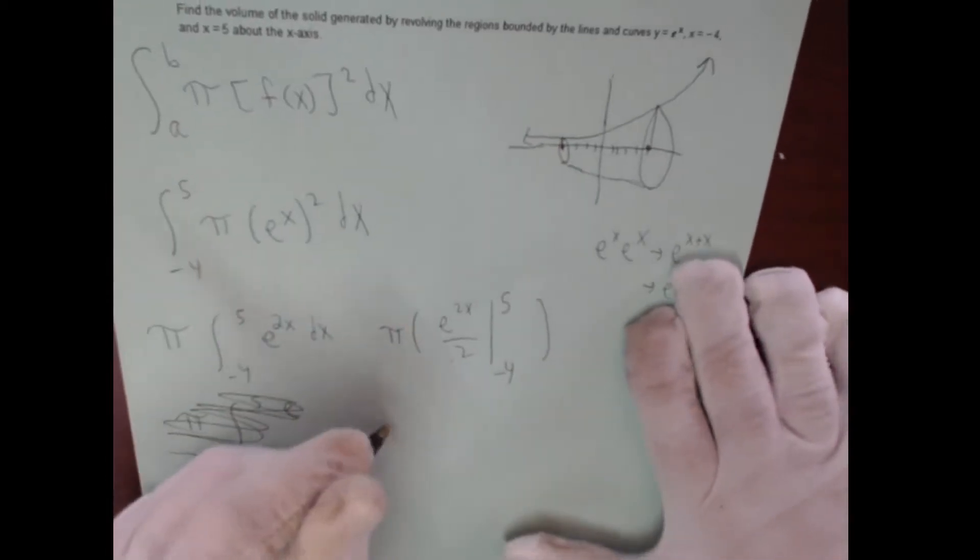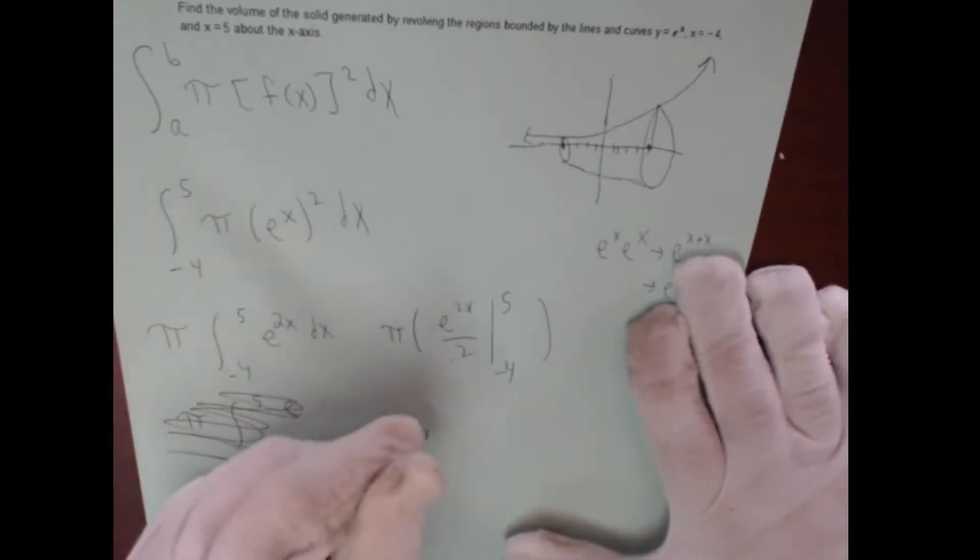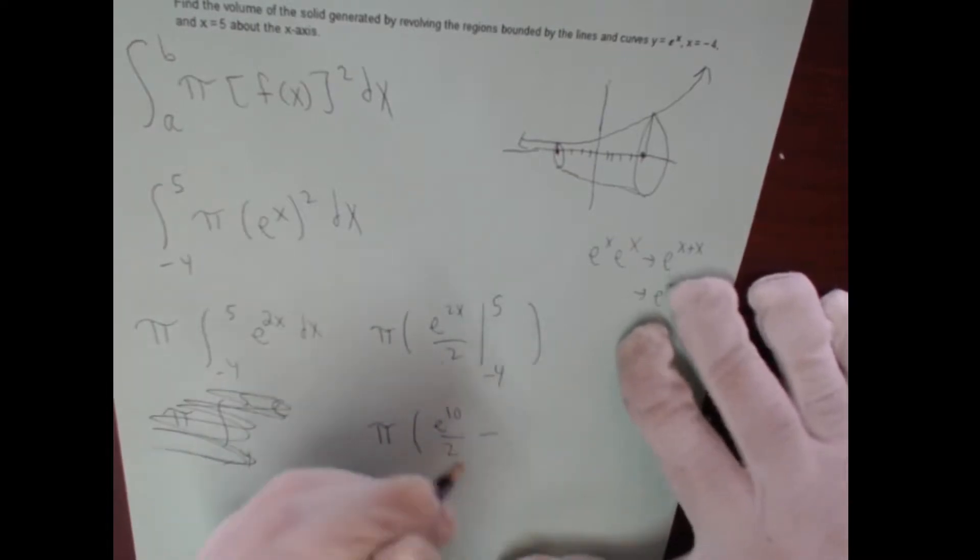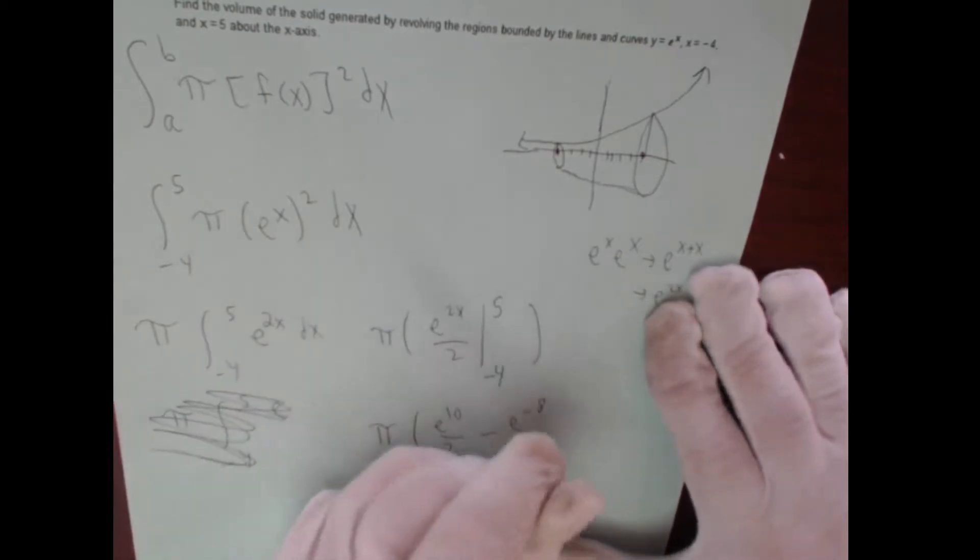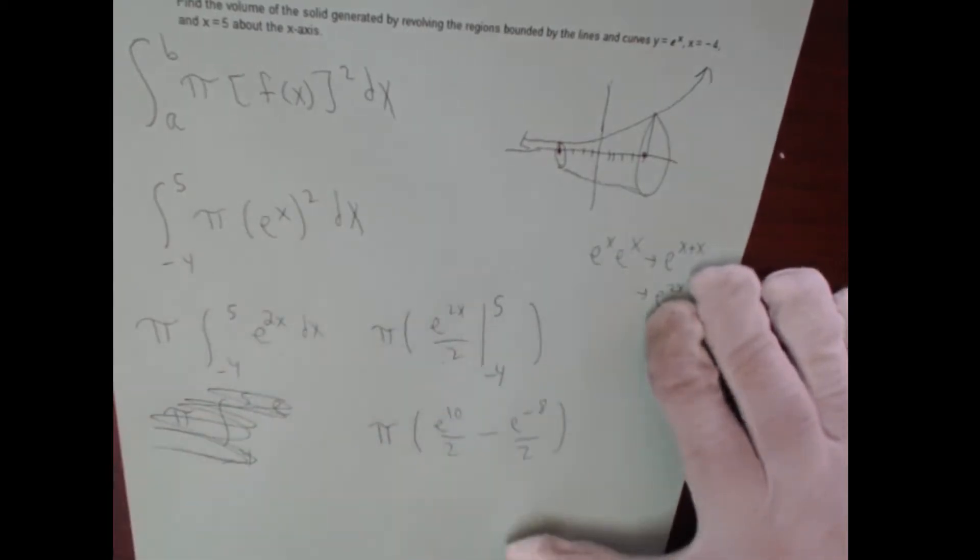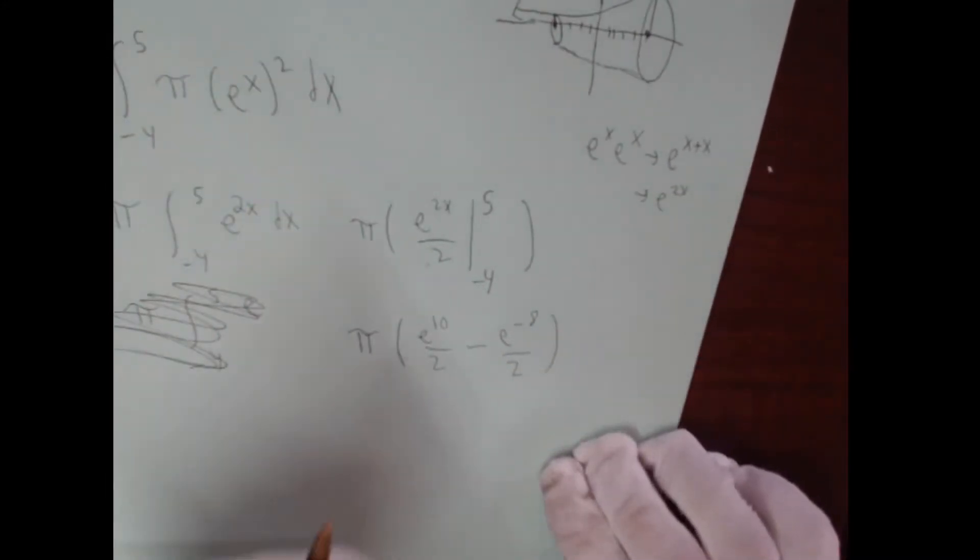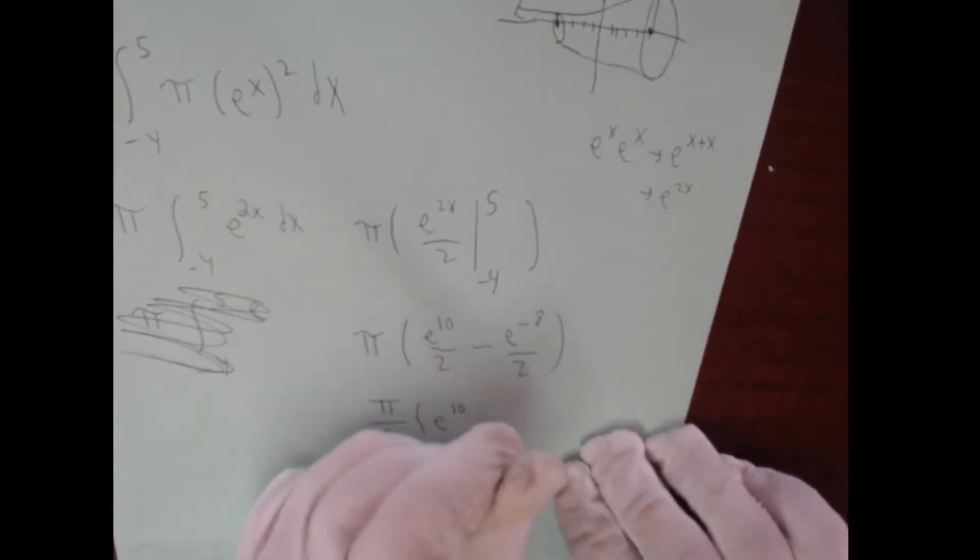All right, so if we do that, there's my pi. This will be e to the 2 times 5 which is 10, minus e to the 2 times negative 4 which will be e to the negative 8, over 2. And this is basically the answer that the book gets. They go ahead and pull out the divided by 2 and factor it, so they get a final answer of e to the 10 minus e to the negative 8 times pi over 2.